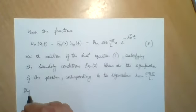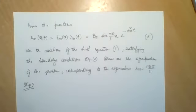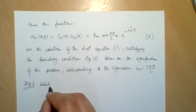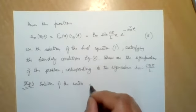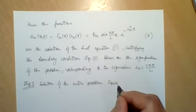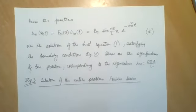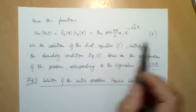Now let us move to step three. In step three, we are going to solve the entire problem using the initial conditions in addition to the boundary conditions, finding the solution of the entire problem by the Fourier series method. So far we have obtained the solutions of equation number eight, which satisfy the boundary conditions.